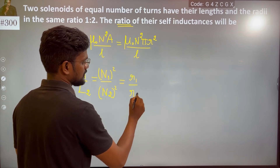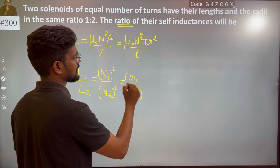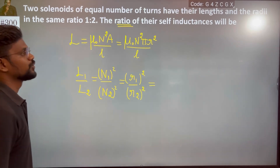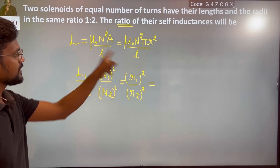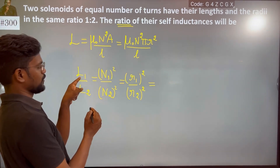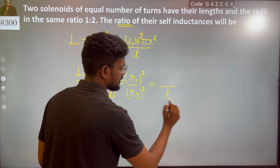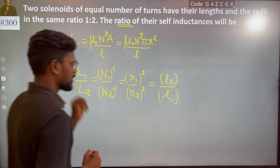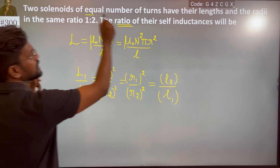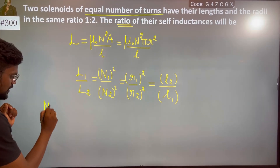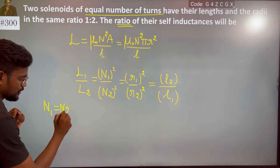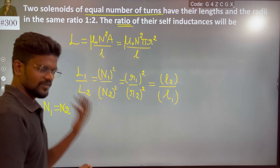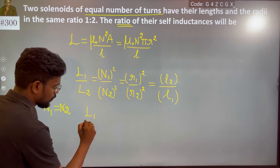First and then second, because it is also directly proportional. Length is inversely proportional. I am pointing at L1. This will be equal to N. L1 will be equal to N, and since N is the same, the lengths will cancel each other.